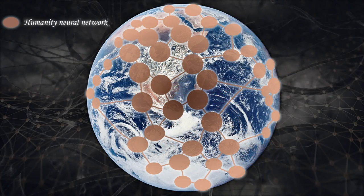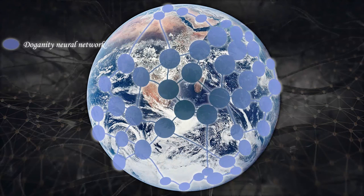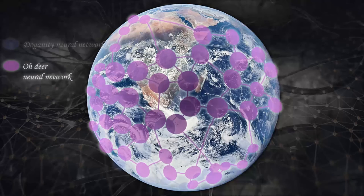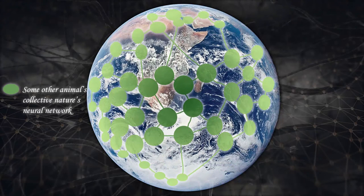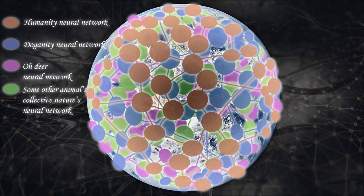So we have the humanity neural network, for lack of a better term, the doganity neural network. The oh-deer neural network consisting of the collective nature of deer. And then another representation of some other animal's collective nature's neural network. Basically, a neural network for all the life on this planet.